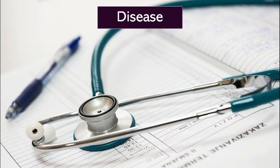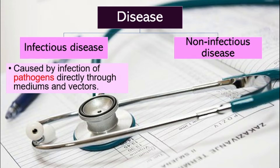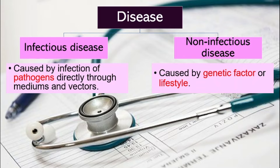There are two types of disease: infectious disease and non-infectious disease. Infectious disease is caused by pathogens — we'll talk about pathogens and what they are in a little while. It is transmitted by pathogens directly through mediums and vectors. And for non-infectious diseases, they are normally caused by genetic factors or lifestyle.